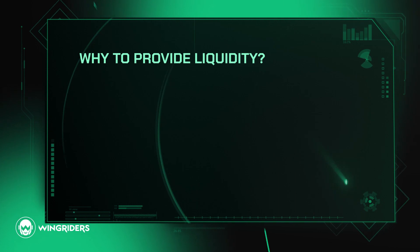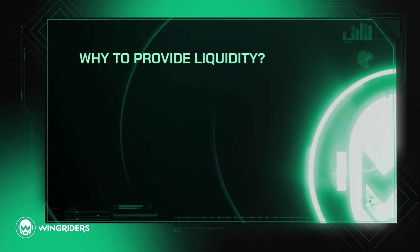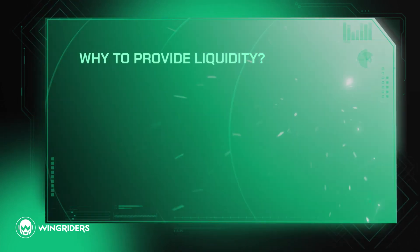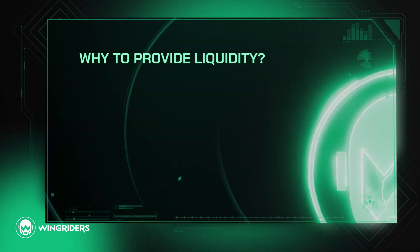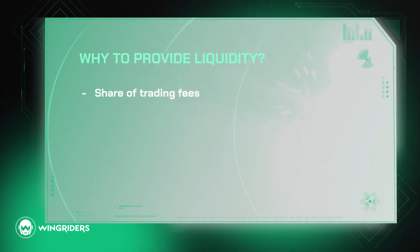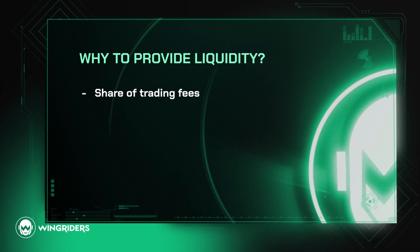You may ask why then provide liquidity into a pool and risk the impermanent loss? In the first place, when you provide liquidity, you get a portion of the trading fees from the pool. The share from fees cannot just offset the impermanent loss, but create profit.